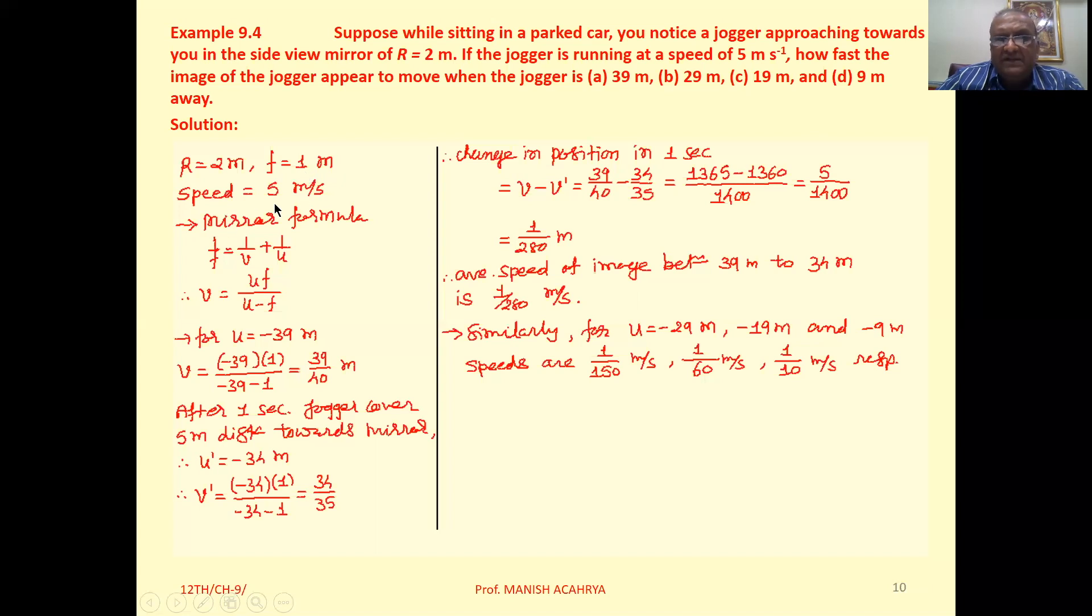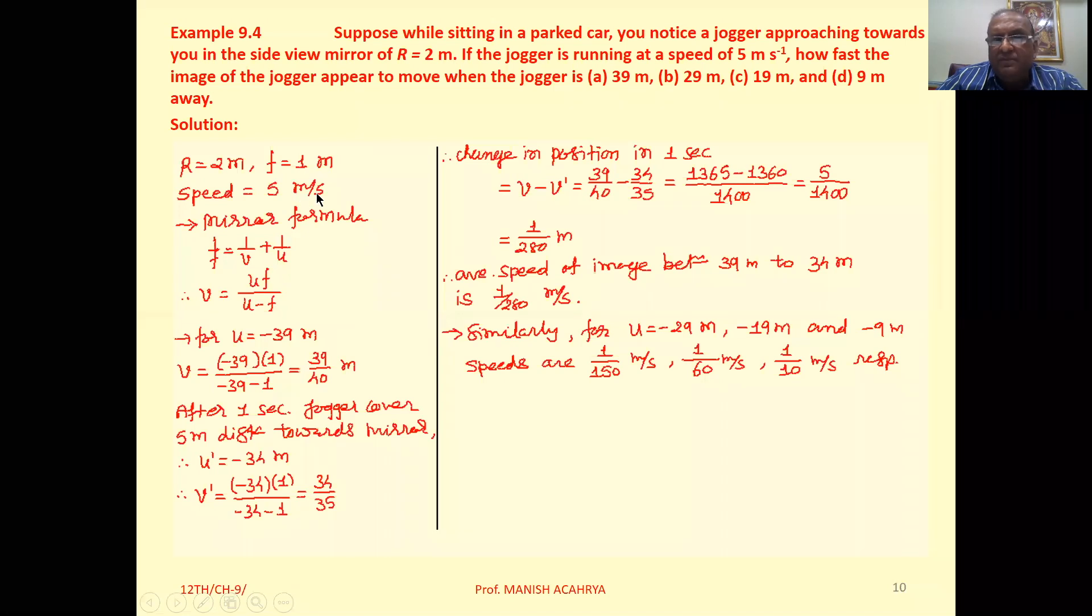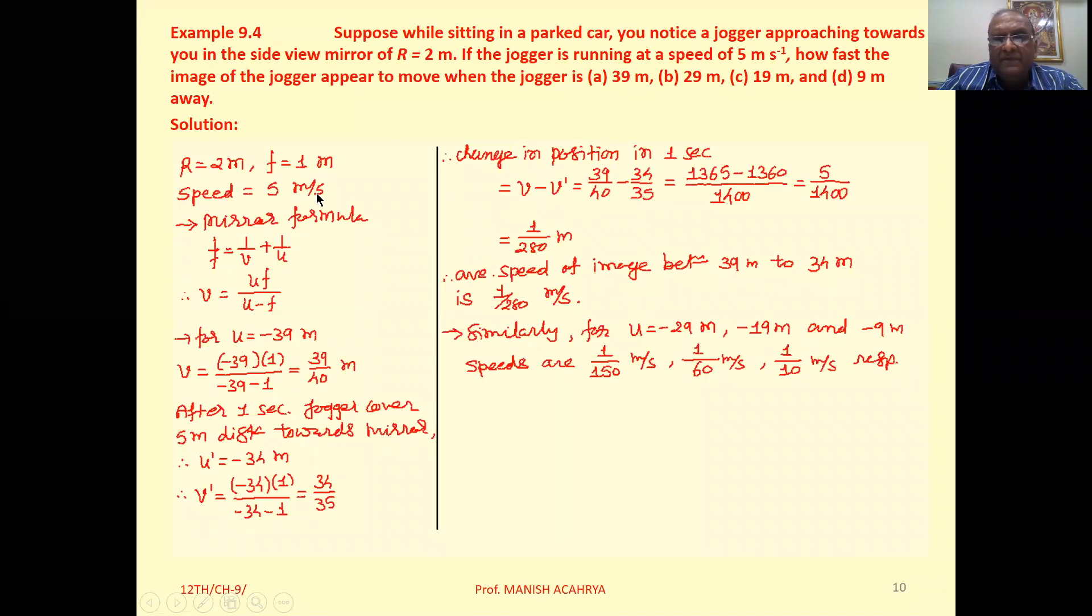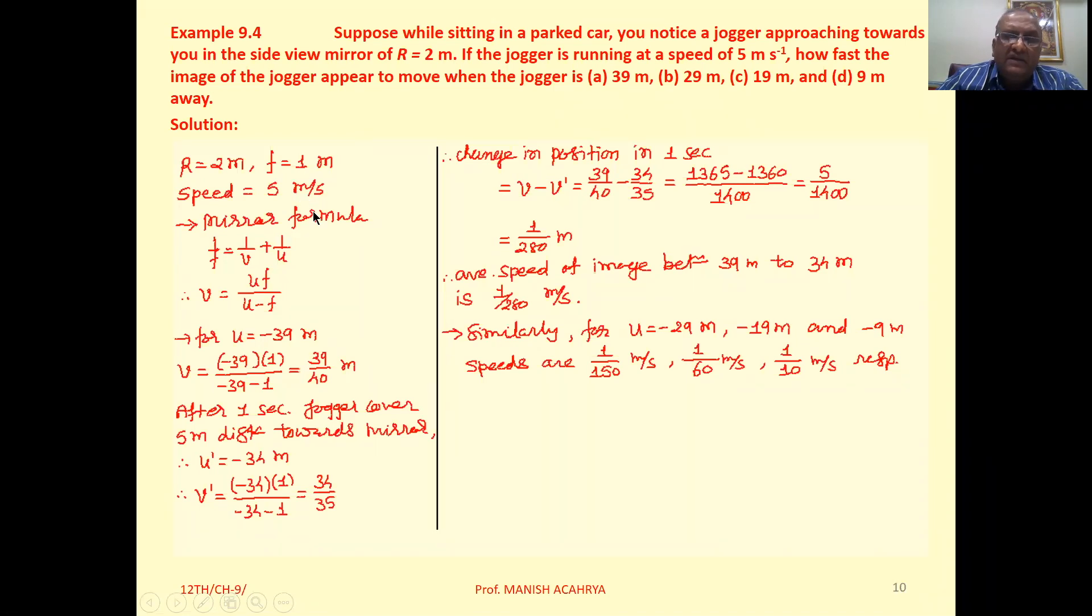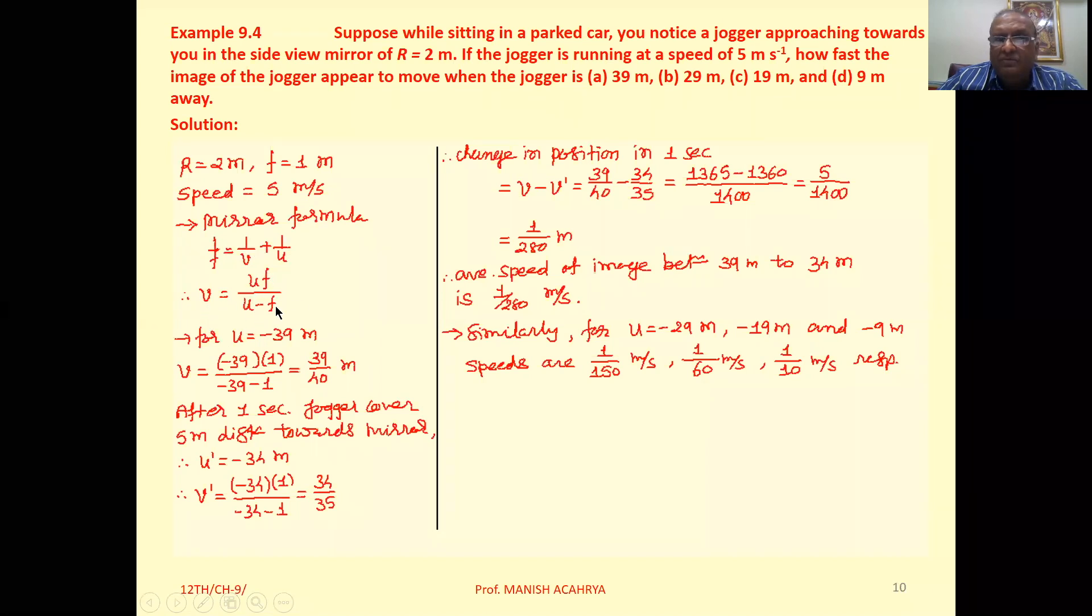Speed of the object is given as 5 meter per second. So we want to find speed of image. The mirror formula is 1 upon f equal to 1 upon v plus 1 upon u. So we can write v equal to uf upon u minus f.